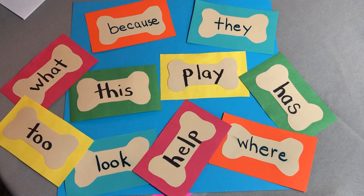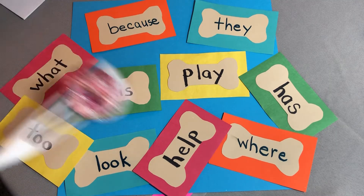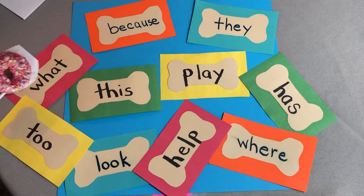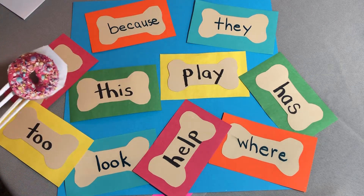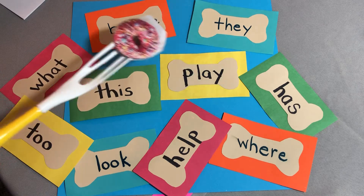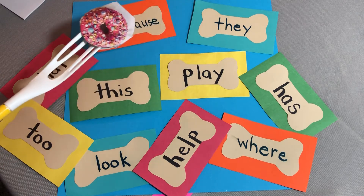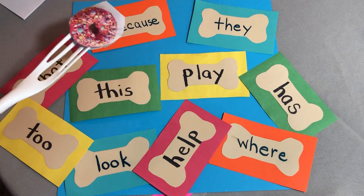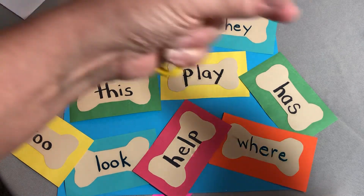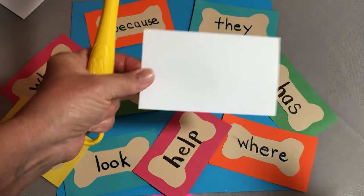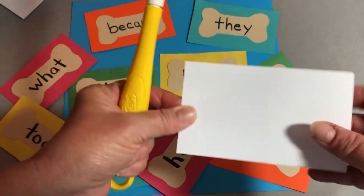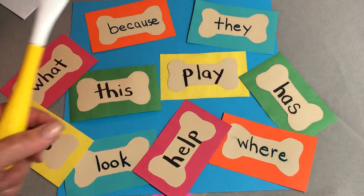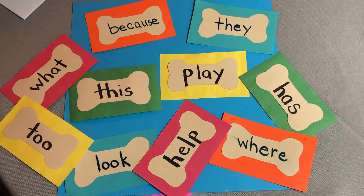You don't have to make a fancy card like I did. You can just put your sight words on small white paper — they don't even need to be cards. I have some little index cards; you could cut these in half and make small ones.